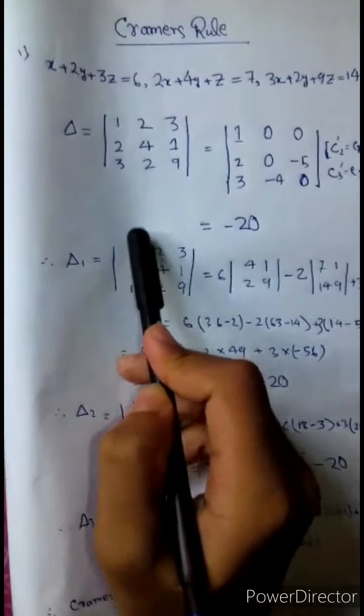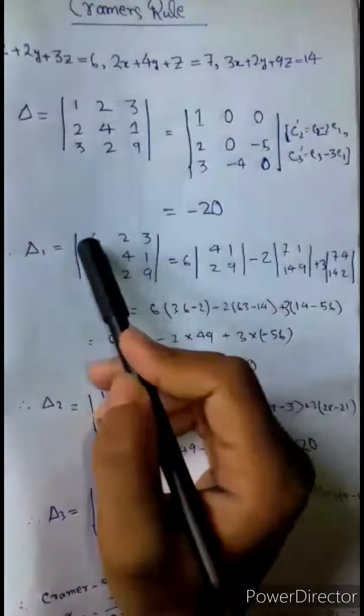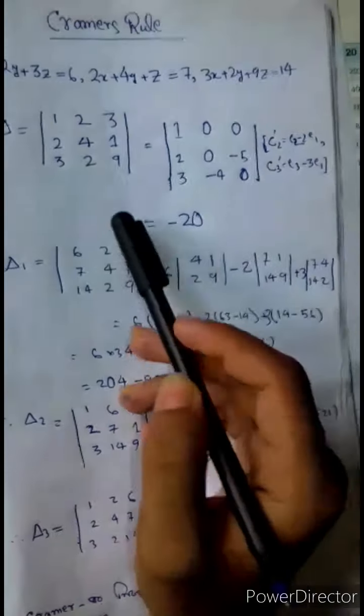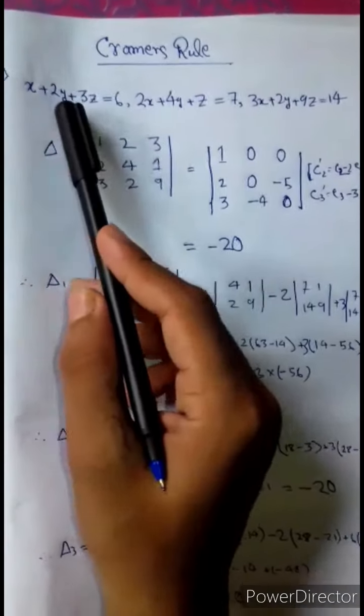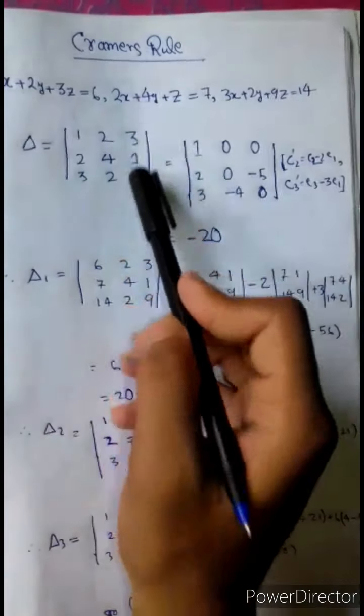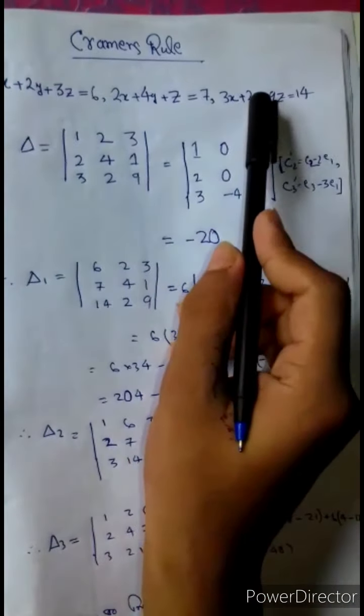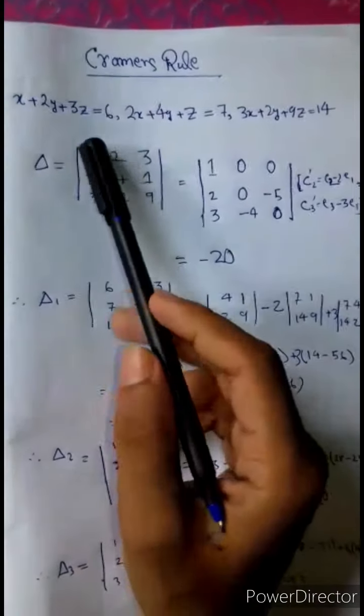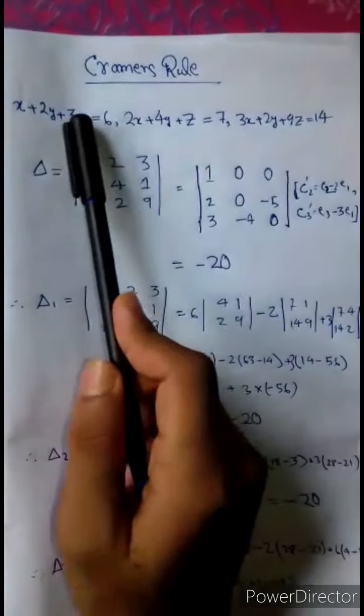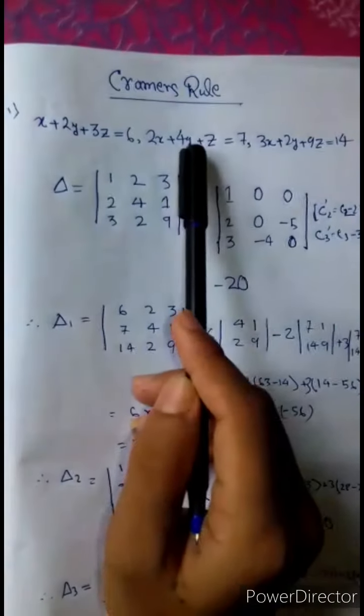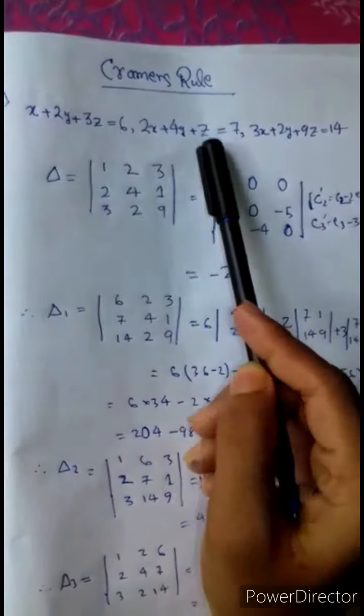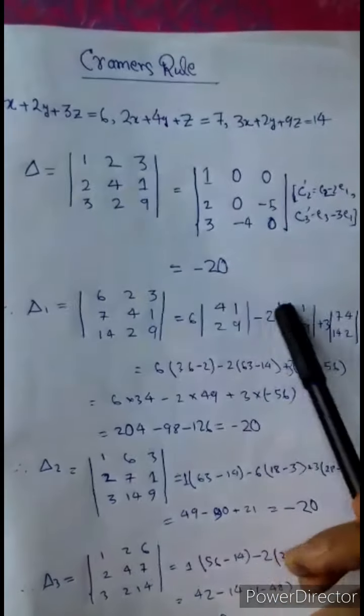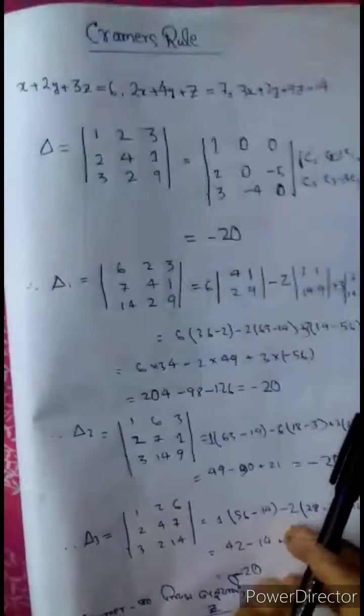For del_1: we have 6, 7, 14. Then 2, 2y, 4y, and 2y for this column. Next, 3z which is 3, z is 1, 9, z is 9. This column's determinant equals minus 20.